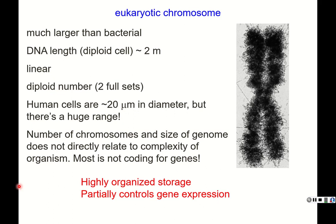The number of chromosomes and size of the genome does not directly relate to the complexity of an organism, because most of the DNA is not for directly encoding genes. Because of the big length of DNA and the small size of the cell, it has to be highly organized, and that organized storage partially controls how the genes are expressed.